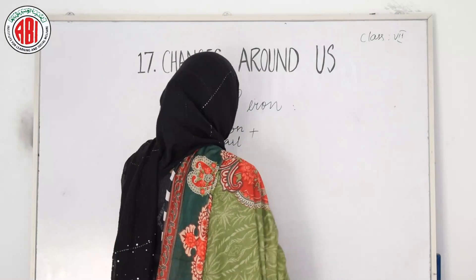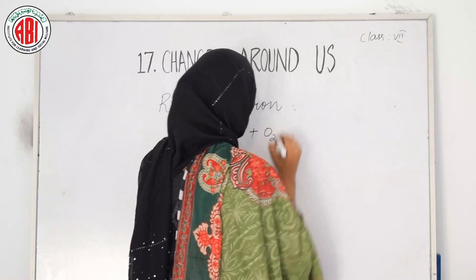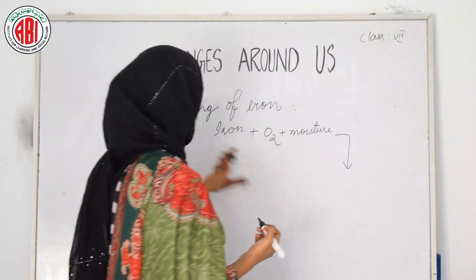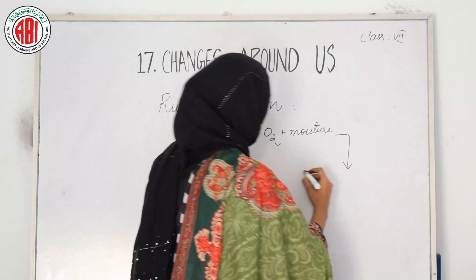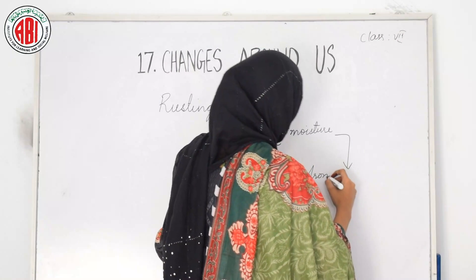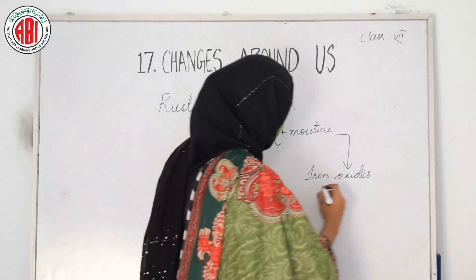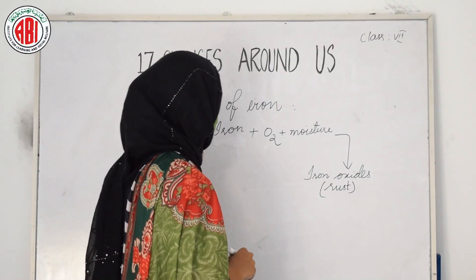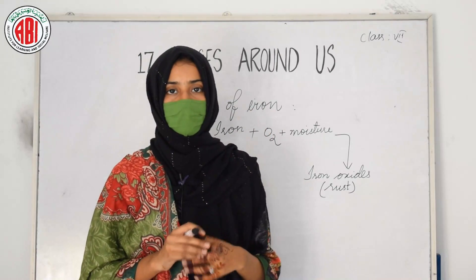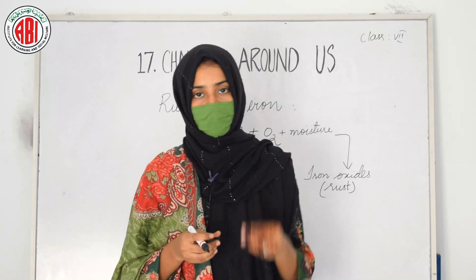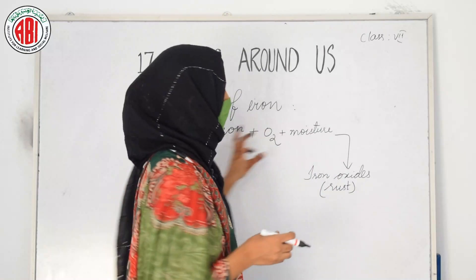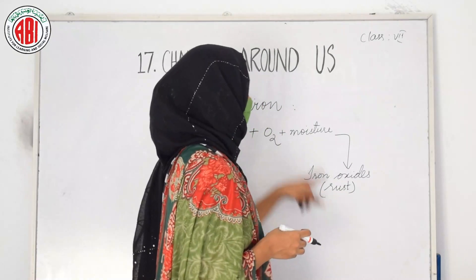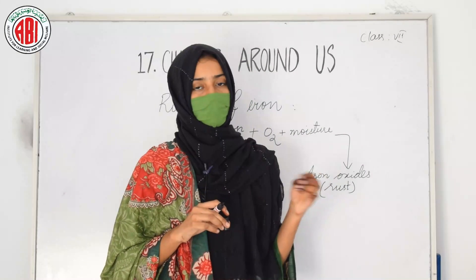The iron reacts with the oxygen and moisture present in the air, and as a result it forms a new product — iron oxides in the form of rust. When any iron material is kept open and exposed, it reacts with oxygen and moisture and results in the formation of iron oxide, which is called rust. Since a new product is formed, this is a chemical change, not a physical change.